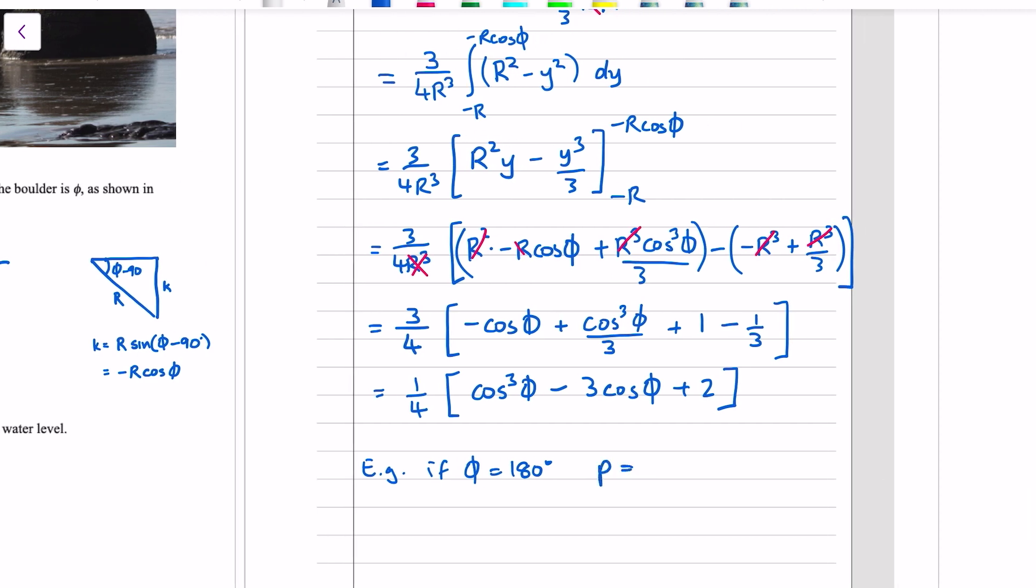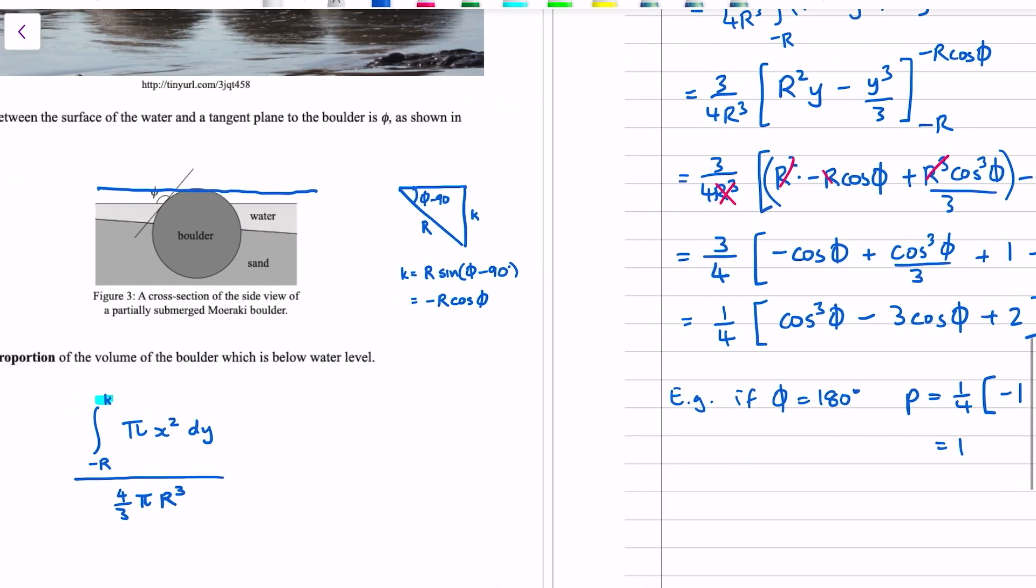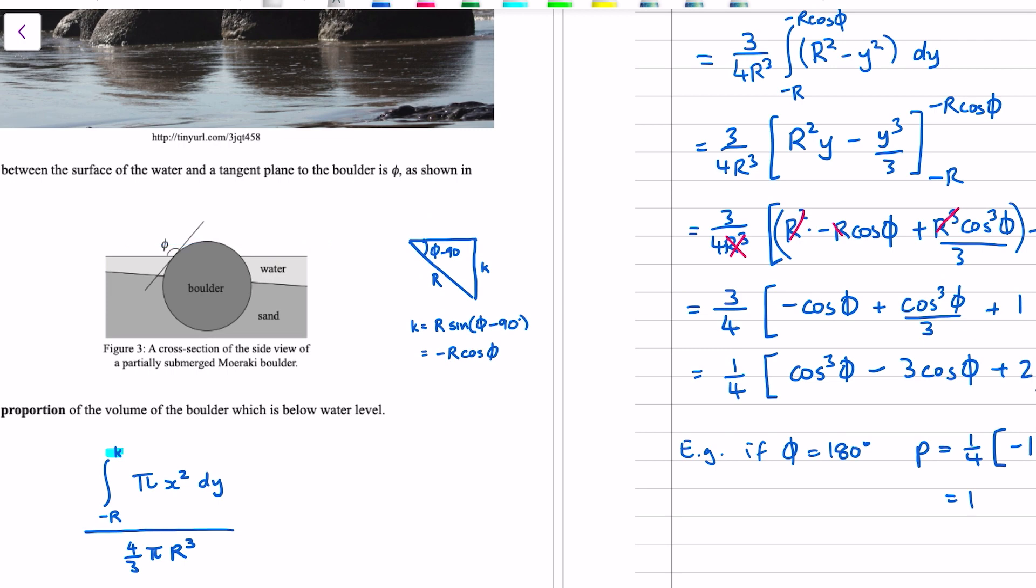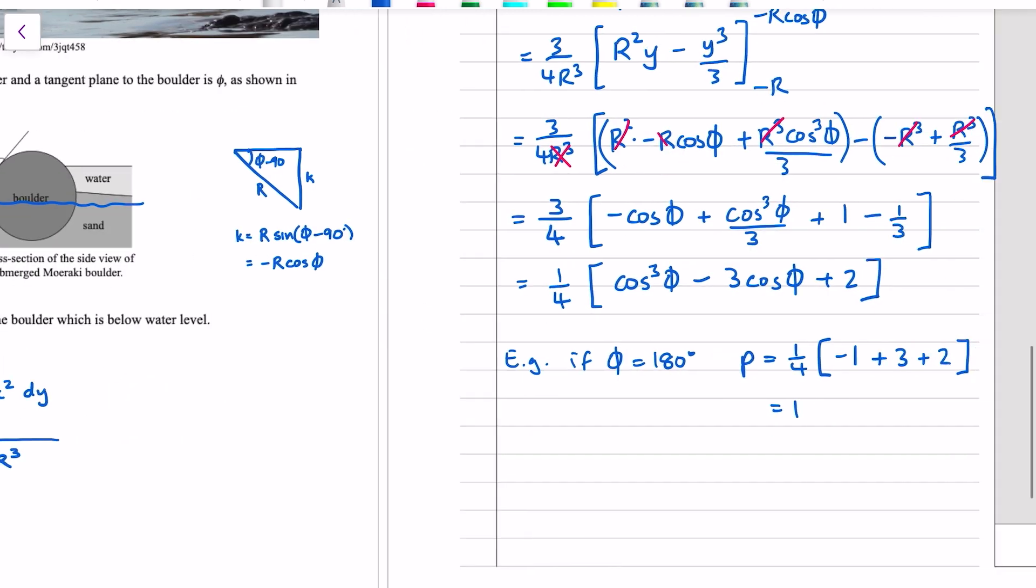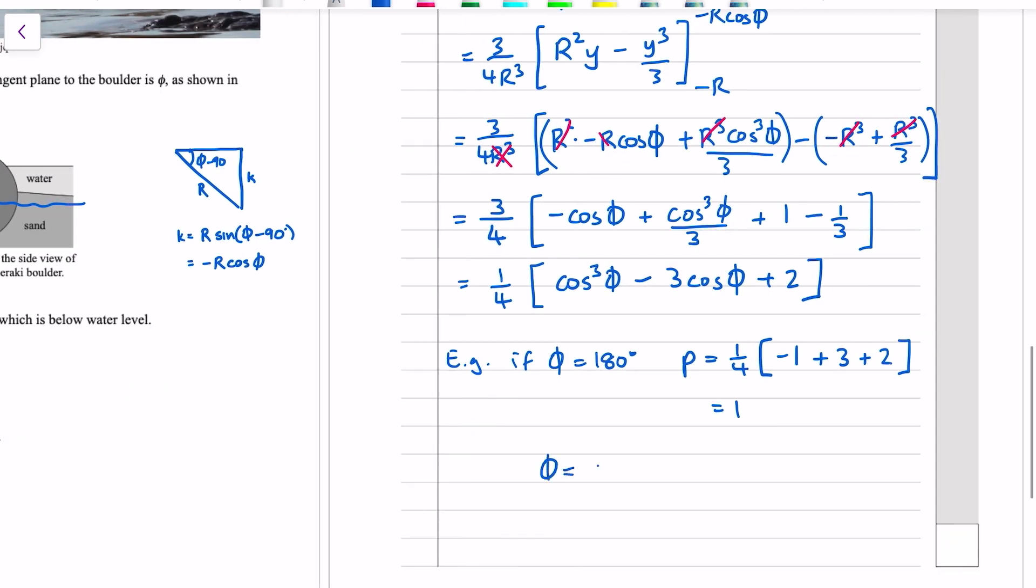So proportion equals (1/4). Cos(180°) is equal to -1. So -1 cubed is -1. Cos(180°), like I said, -1. So we've got plus 3, plus 2. And that's equal to 4/4 = 1. So it seems to be working for that one. If the boulder was half submerged, so if the water line came through the middle there, then φ would be 90 degrees. And we should get a proportion of a half here. P = (1/4). Cos(90°) is zero. So we get zero minus zero plus two, which equals a half. So it seems to be the right formula.